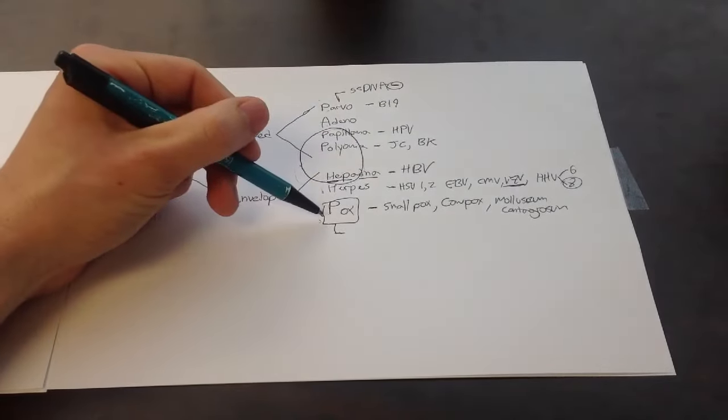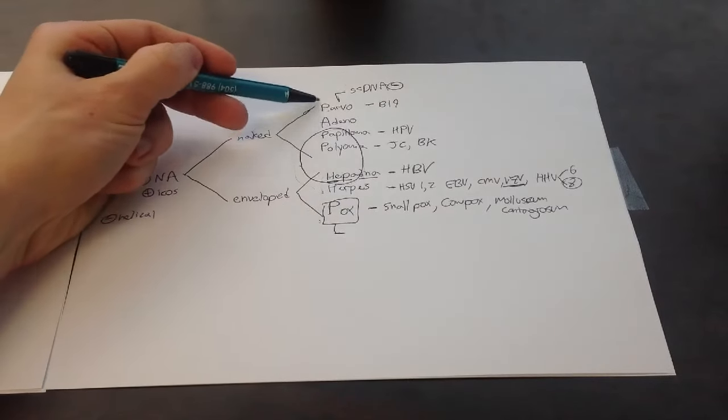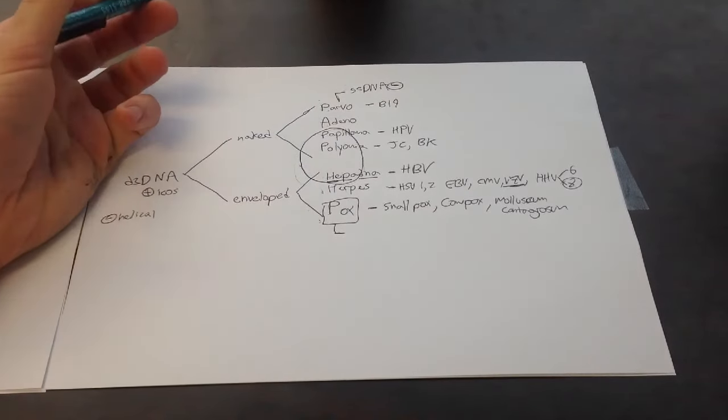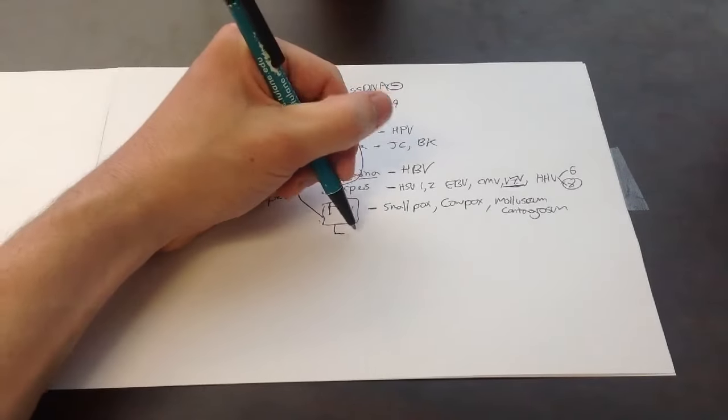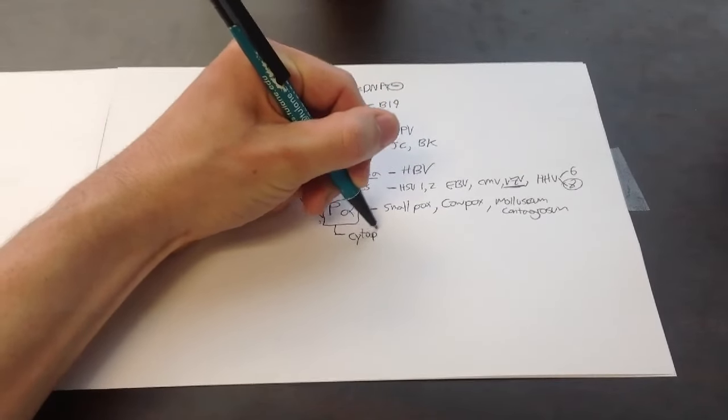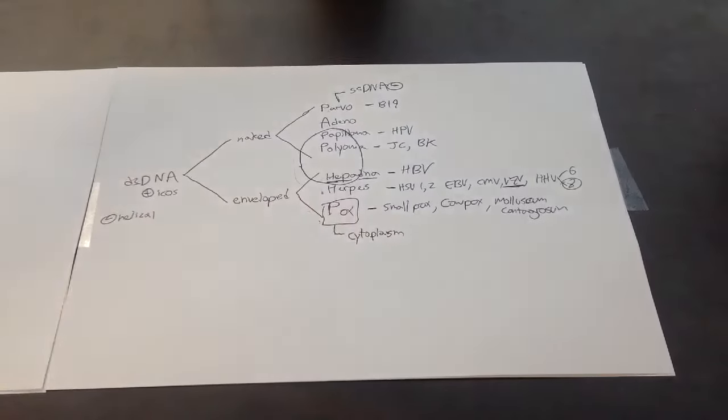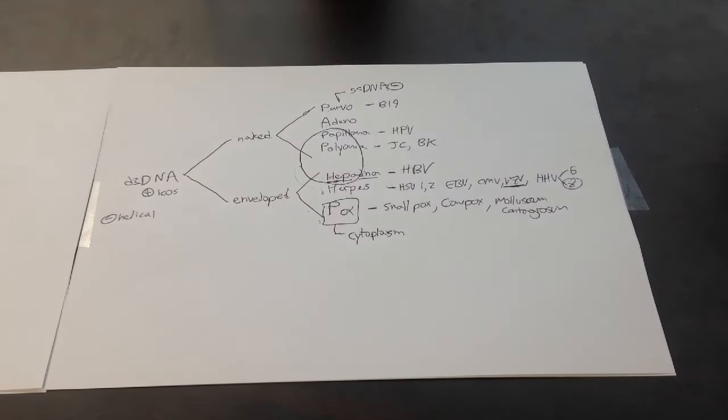Poxvirus is huge. So while all these guys replicate in the nucleus because they are all DNA. So DNA goes to the nucleus. Poxvirus is so big it can't get there. So it replicates in the cytoplasm. That's it for DNA viruses.